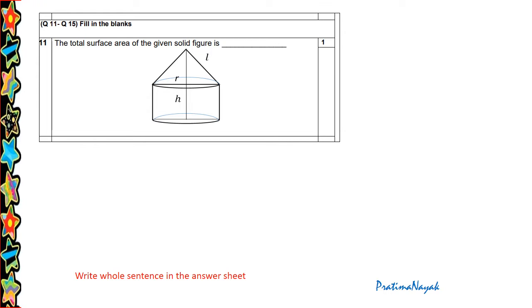A figure is given and you have to get the total surface area. So here base area is pi r square, side area is 2 pi r h, and curved surface of the cone is pi r l. So total surface area is pi r square plus 2 pi r h plus pi r l.